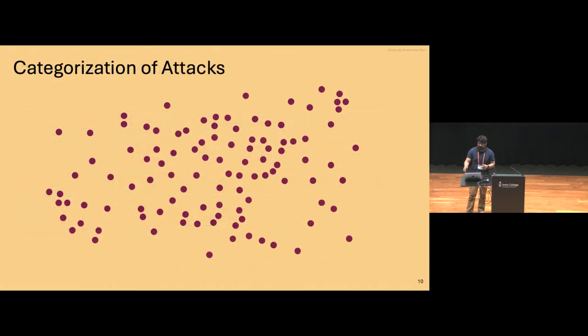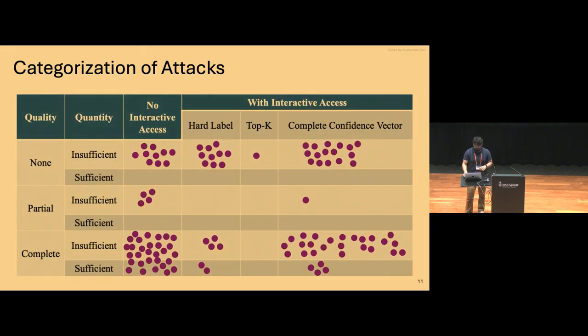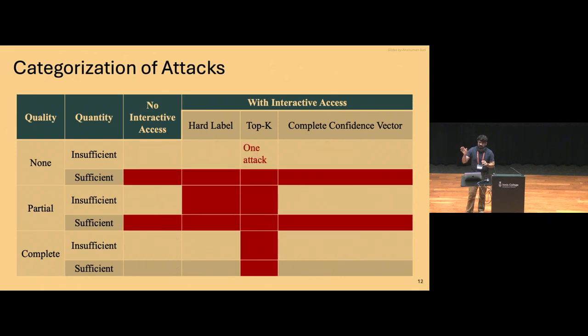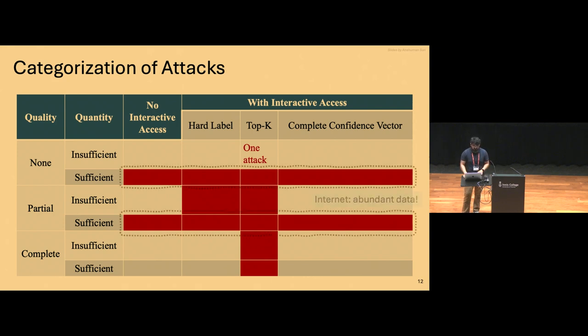And based on these four axes and the taxonomy that it induces, we try to categorize existing attacks. And what we see is that almost all of them fall in these big major categories. But the important point over here is that there are these gaping holes in the taxonomy. And unfortunately, the kind of areas where there's been no work with respect to the specific threat models happen to be the ones that would be probably most relevant in practice.